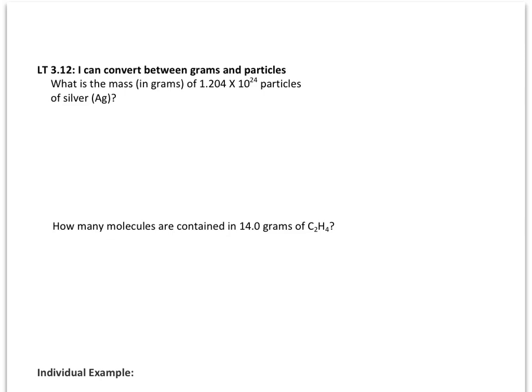Learning Target 3.12 says I can convert between grams and particles. Now, in Learning Target 3.2, we will have a two-step conversion, which means we will need to use two conversion factors. Our first example says, what is the mass in grams of 1.204 times 10 to the 24th particles of silver, Ag?